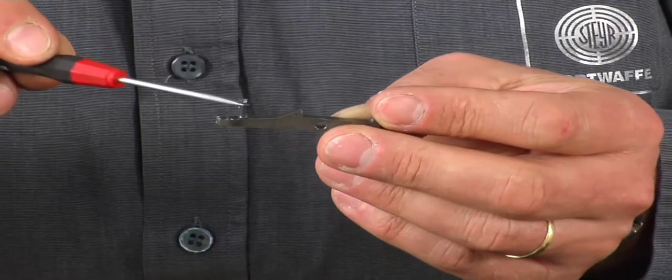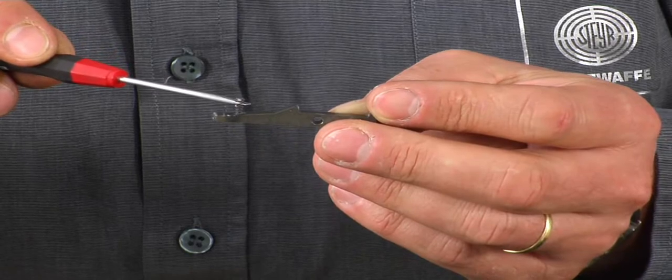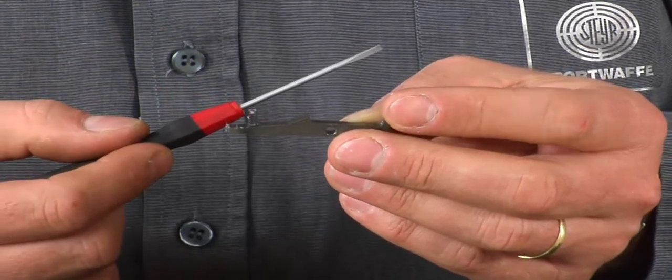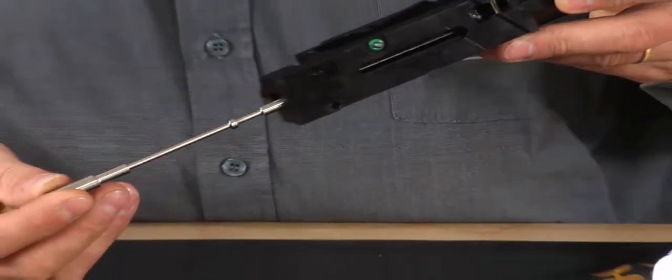When reassembling the part it is essential that this spring is correctly repositioned in the sear catch link. Now the striker can be drawn out easily.